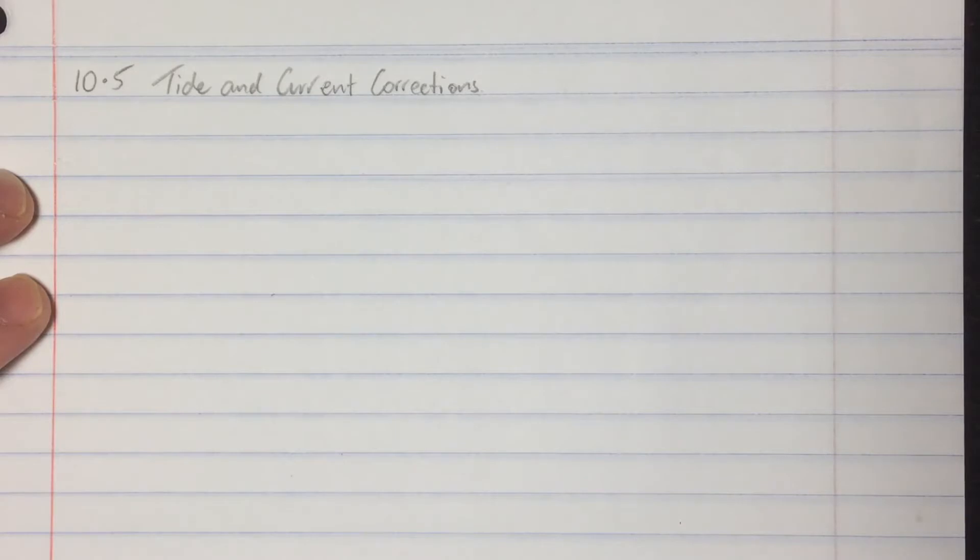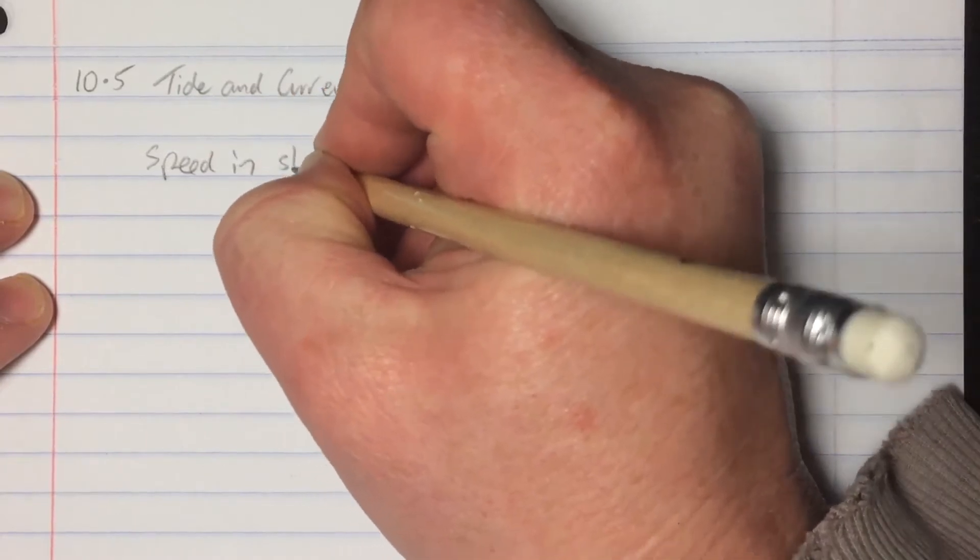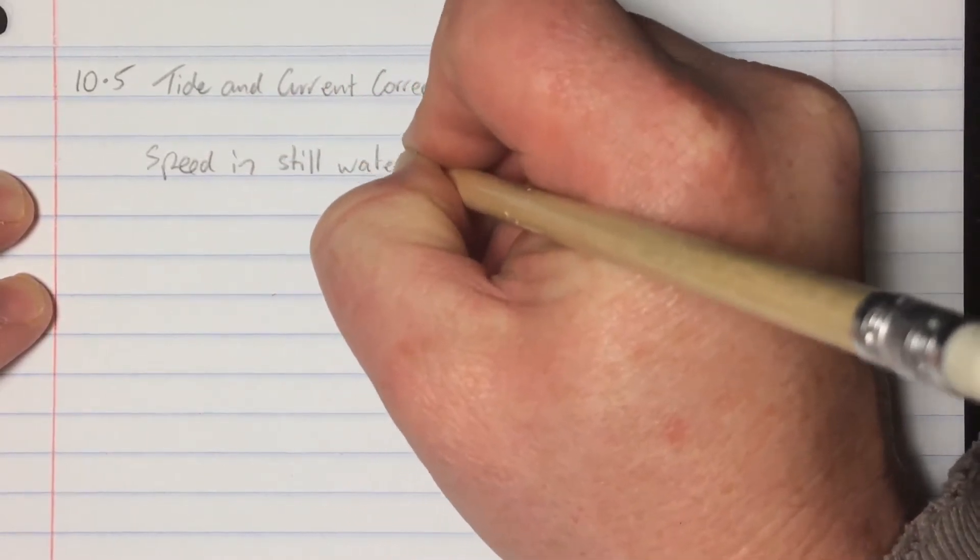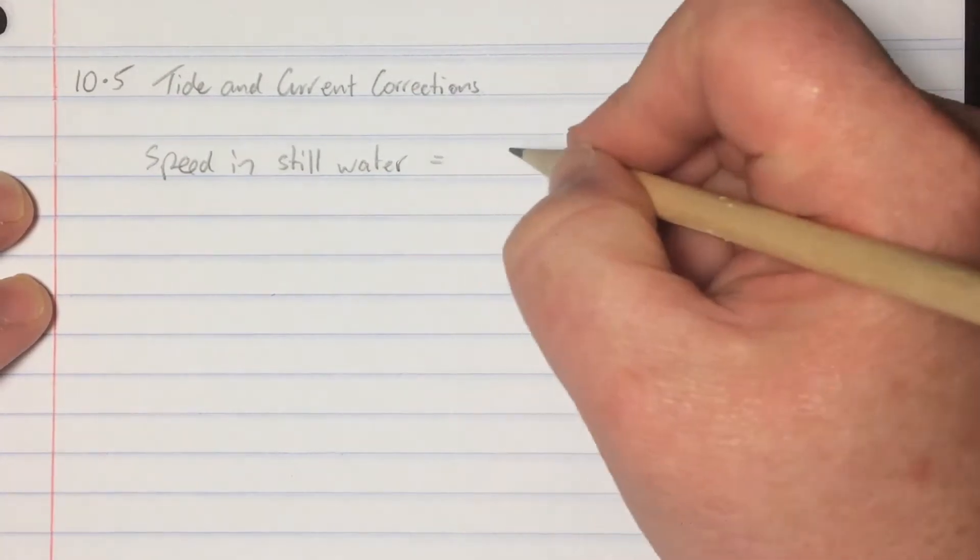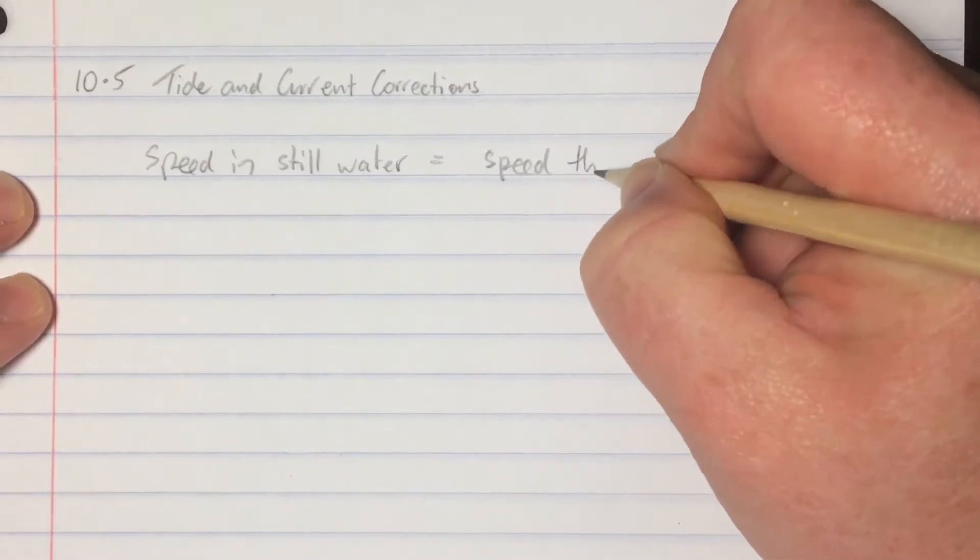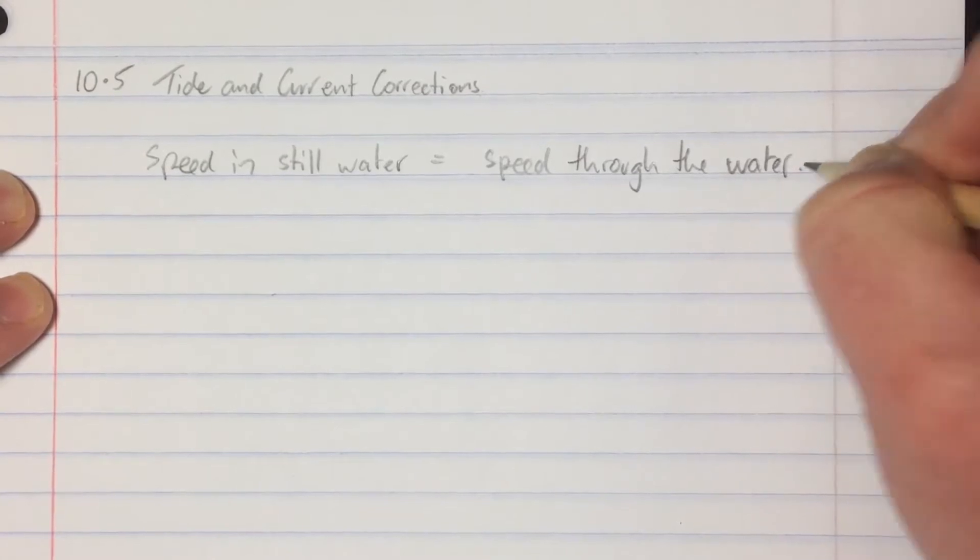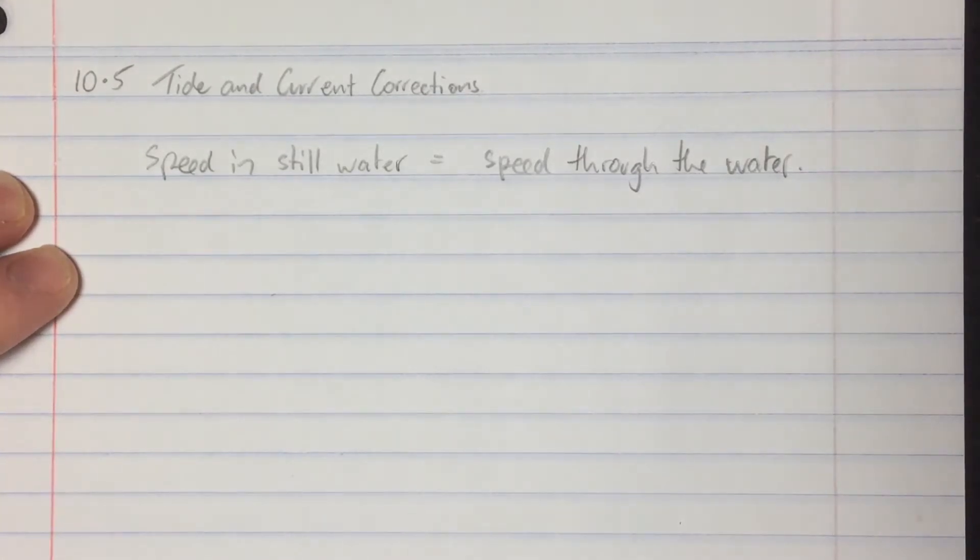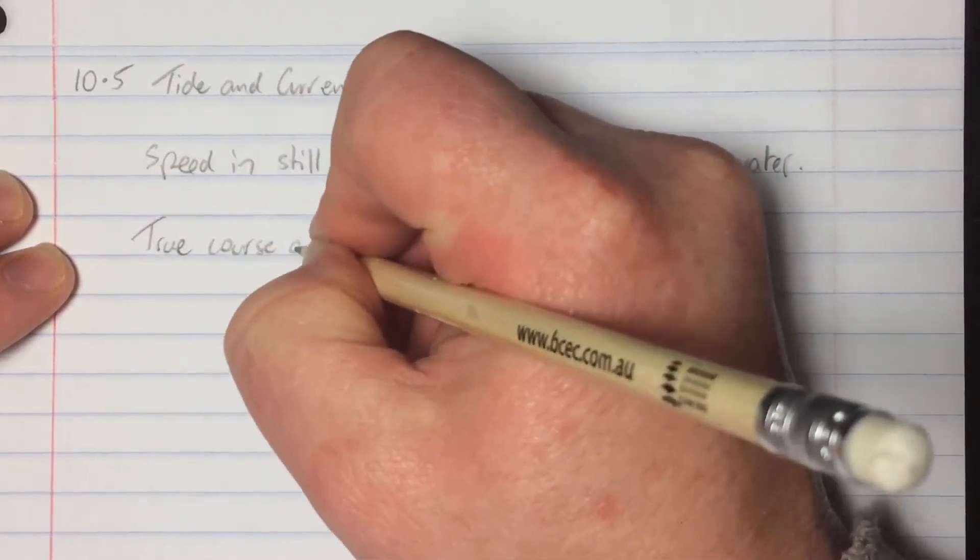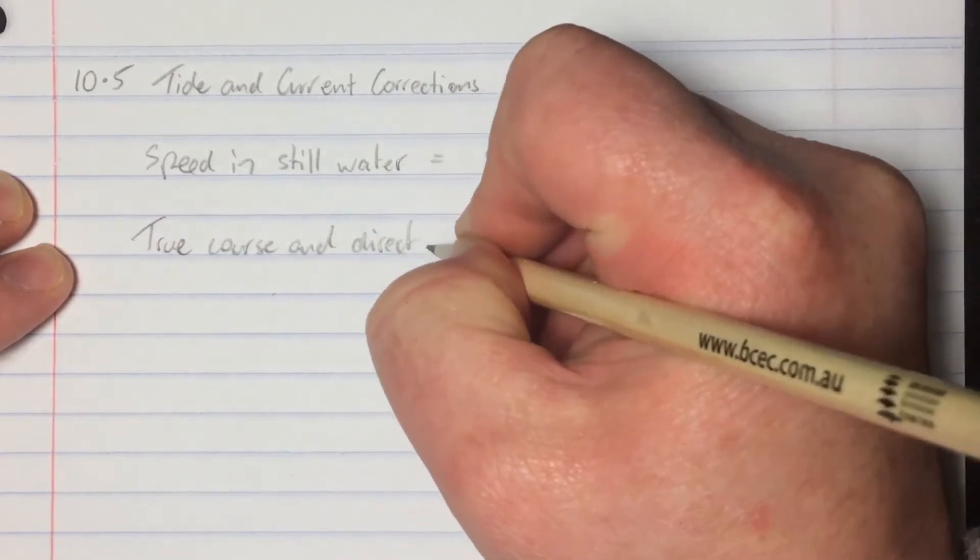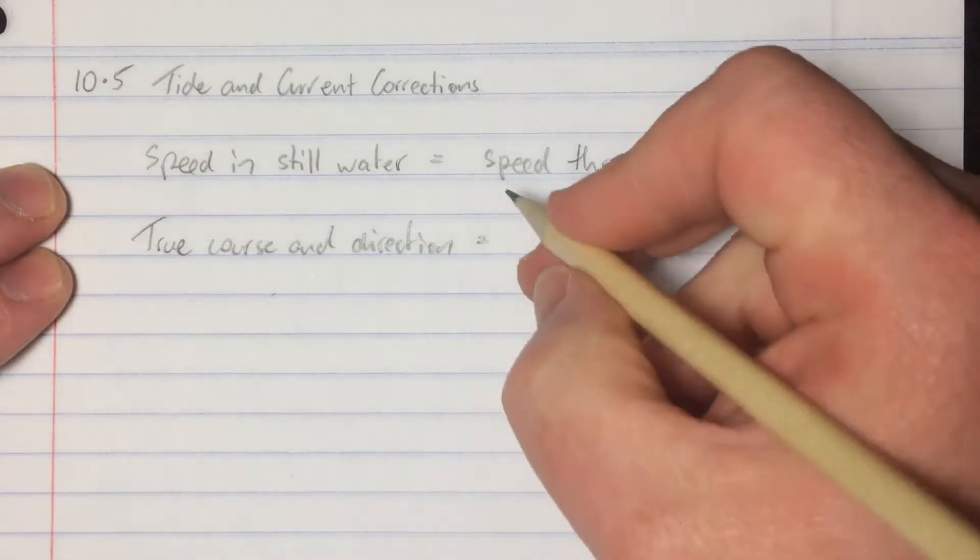So let's just make a note of those two things. The speed in still water is what we call the speed through the water. The true course and direction are what we call the speed and course made good.